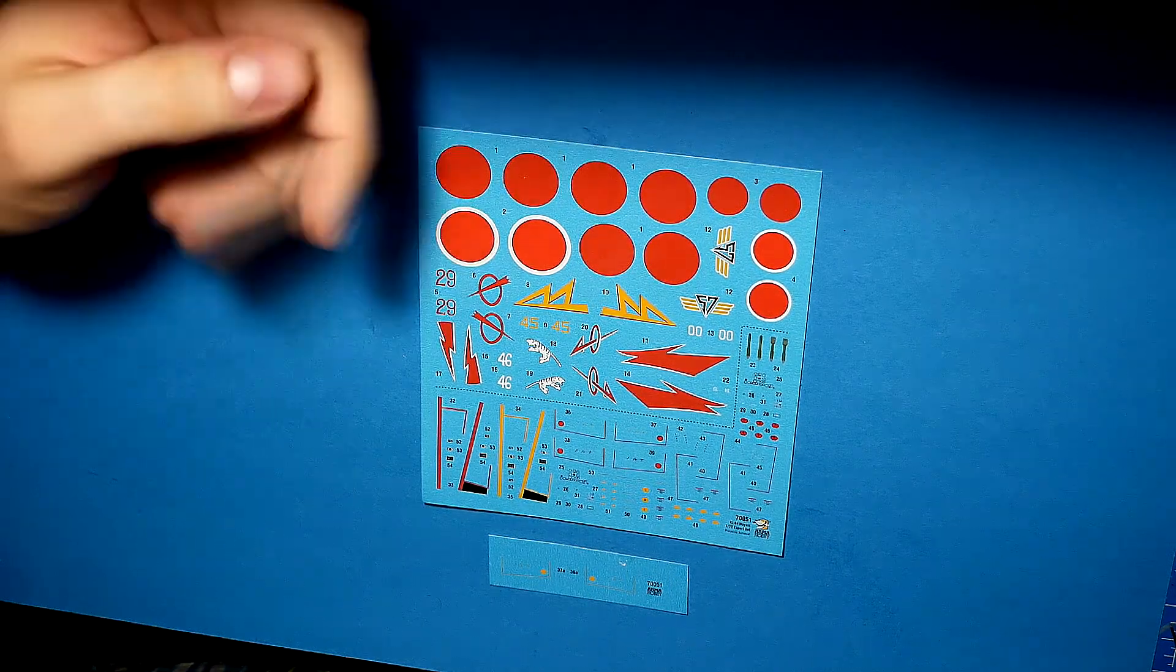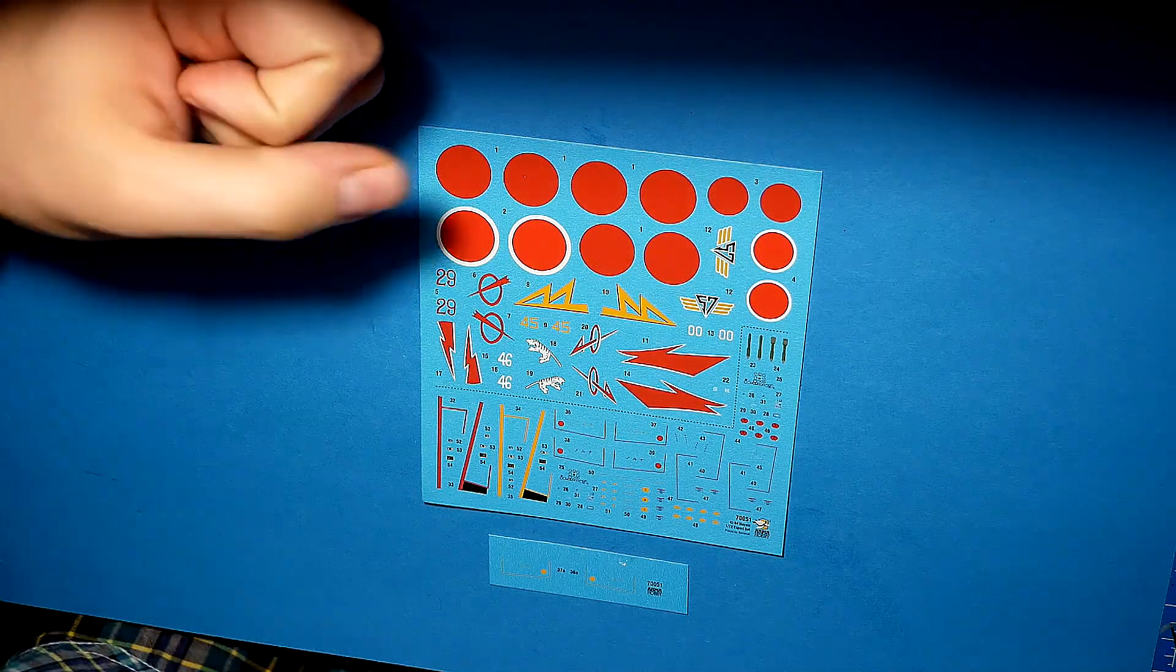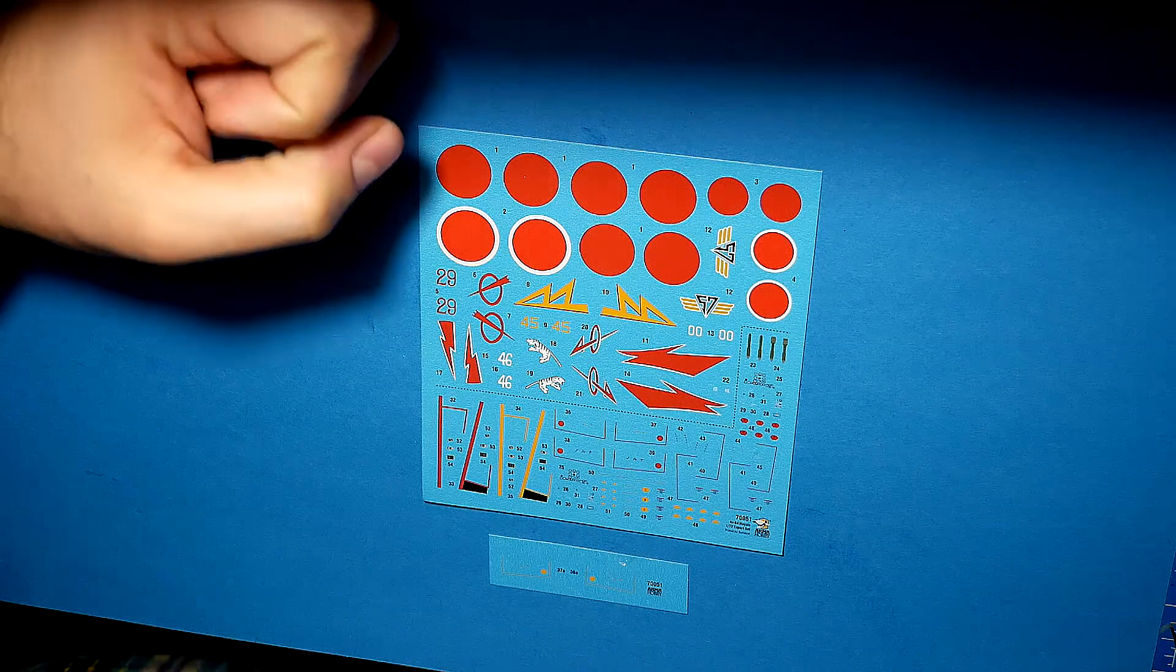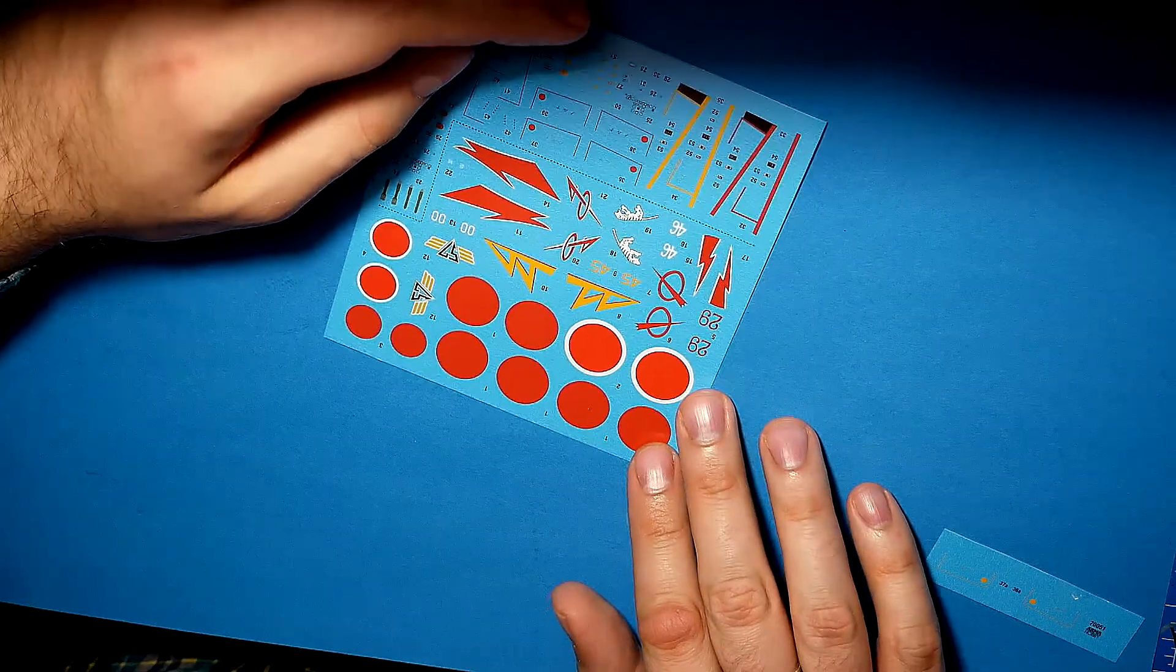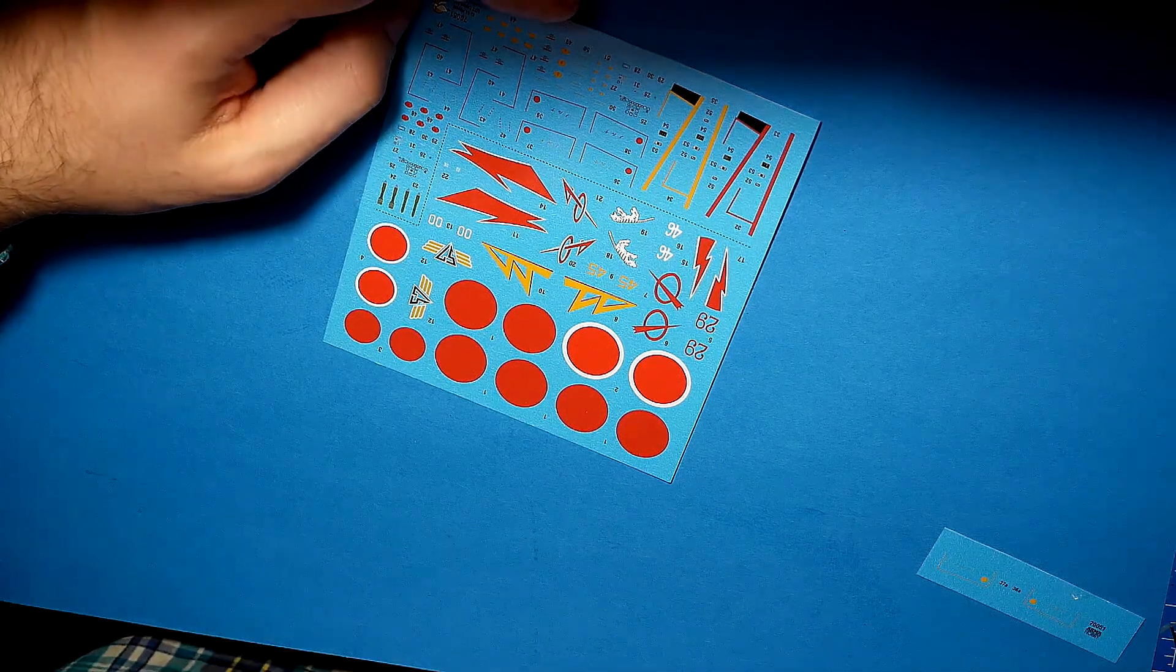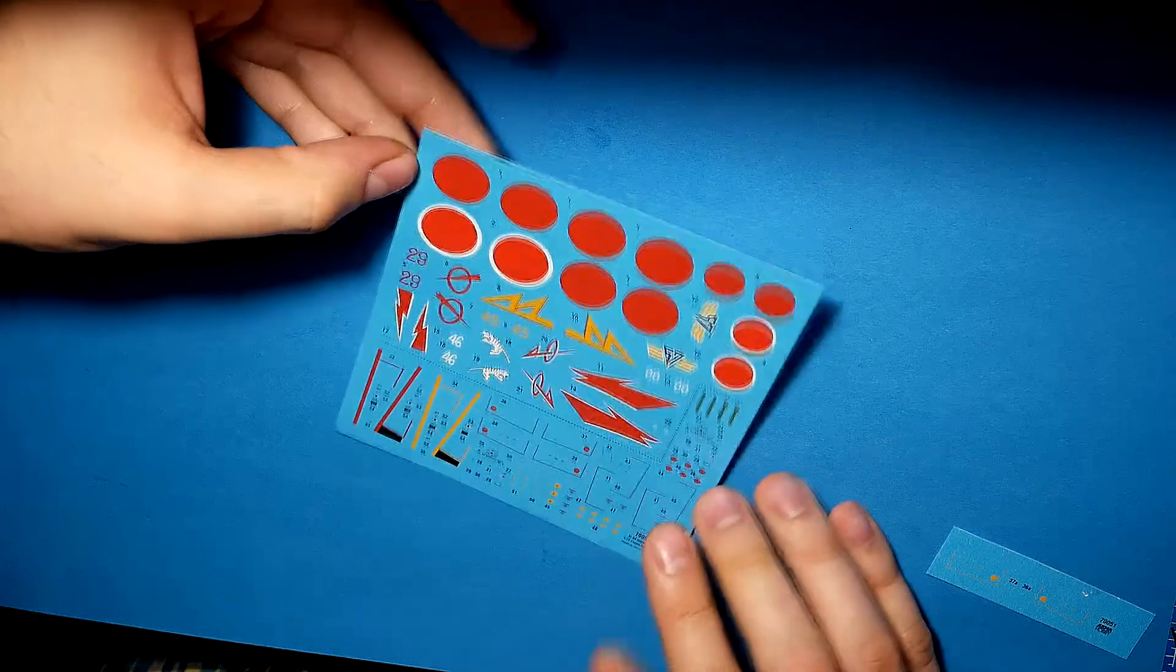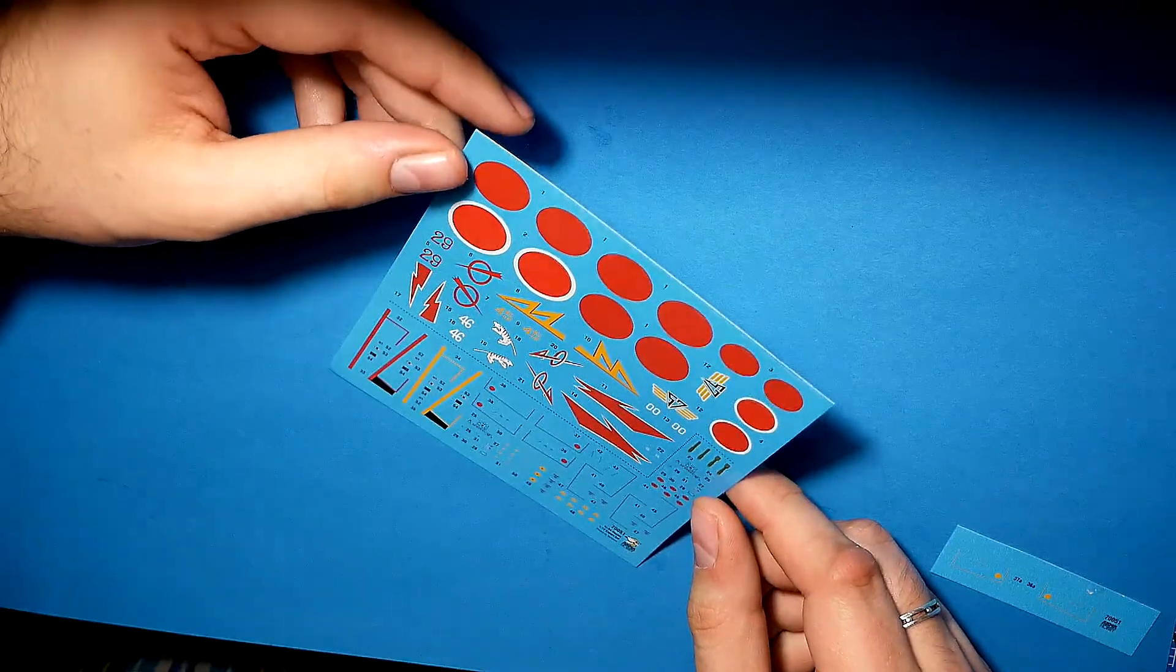But remember, if you have ordered Techmod decals from about 10 years ago or so, remember to be extremely careful working with them. Because these older decals are extremely thin and it's better to make them safe with gloss lacquer, gloss varnish, before putting them to the water.